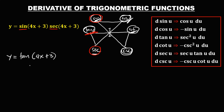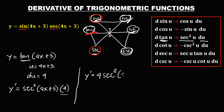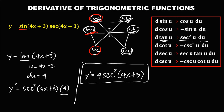To find the derivative: u is 4x plus 3, and du — the derivative of u — is 4. Since the derivative of tangent is secant squared, we have secant squared(4x plus 3) times du, which is 4. We need to write the constant first, so we have 4 secant squared(4x plus 3). This is now the derivative.